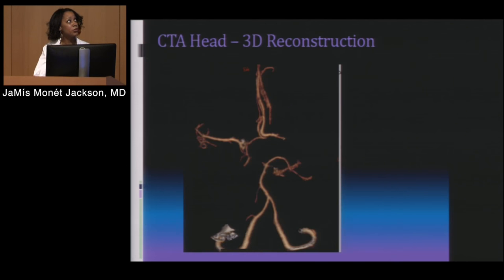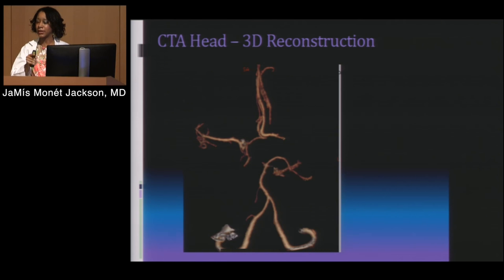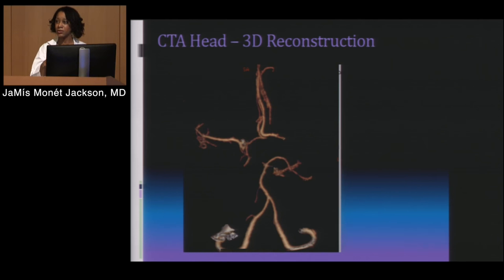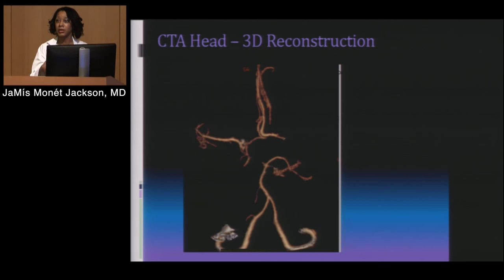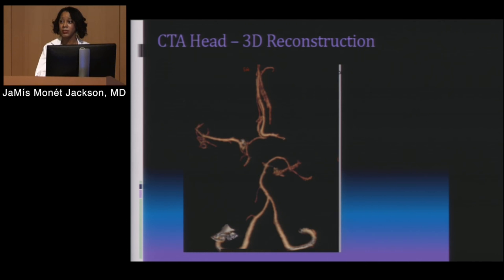This is a 3D reconstruction that we also look at in CTAs — just another way to visualize it. You can use the computer to turn it in all different directions to get better visualization of where there's actual loss of flow. It correlates with exactly what we just saw: there's no adequate flow there. She did have some, but not enough to properly perfuse that area of the brain. That's just another tool to help guide us with therapy and understand what's going on with the patient.